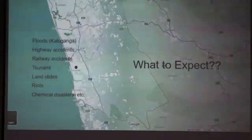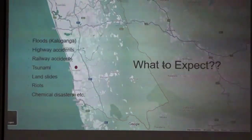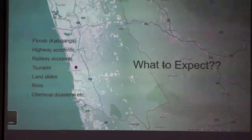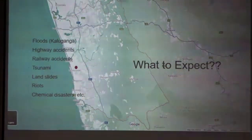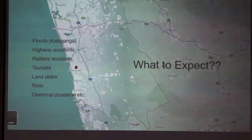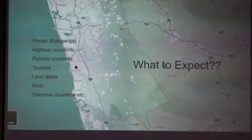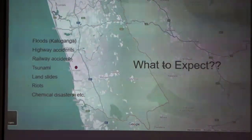The disasters we are anticipating in our district, Calcutta: the red dot shown here is the rough location of Calcutta Teaching Hospital. As you can see, the district is close to the sea, so we can expect tsunamis. Before 2004, we didn't anticipate that — which is why we had such a number of casualties. During the monsoons, as previously mentioned, we can also have floods.